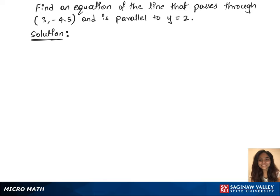To solve this question, we'll first need to know the slope of the equation y equals 2, which is 0, and it remains the same for the other line because they are parallel.